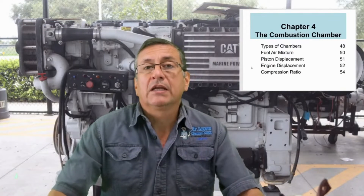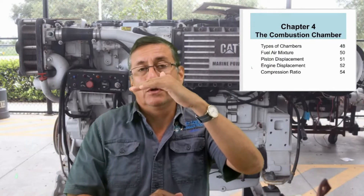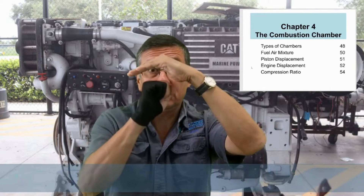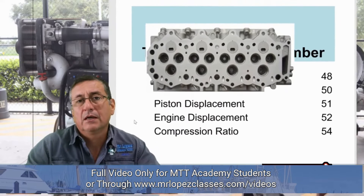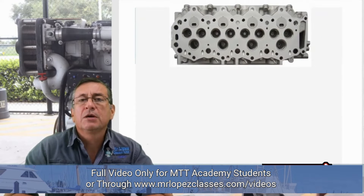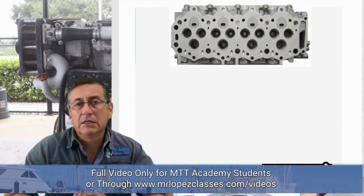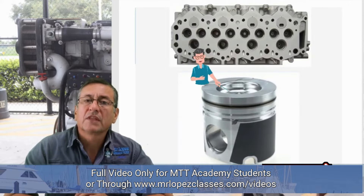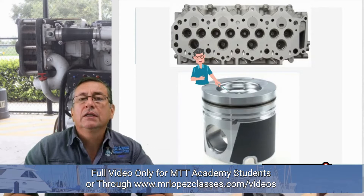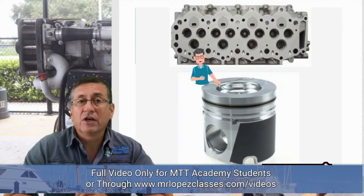Remember the combustion chamber is the area created by the head and the piston. In the majority of diesel engines, the head is flat with the valves on it. However, the pocket for the combustion chamber is created between the head and the piston, because the pocket is located on the piston. In that pocket is created basically the volume of the combustion chamber.